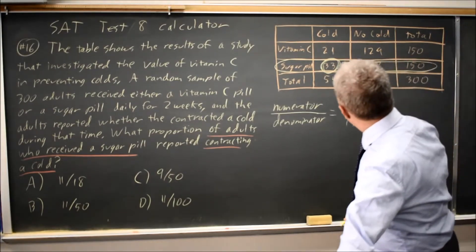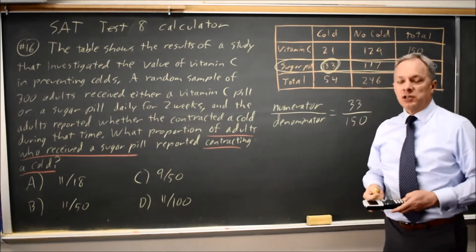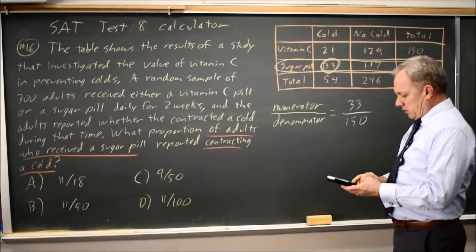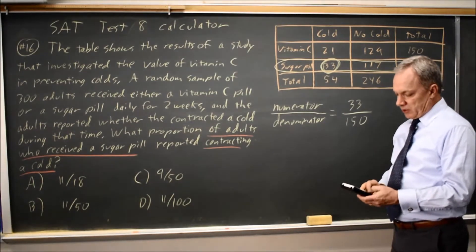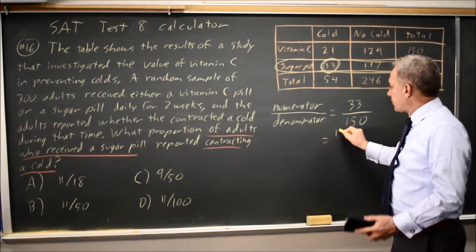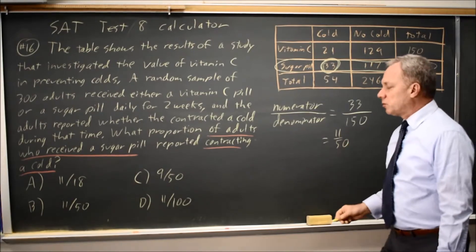Now 33 over 150 is not an answer choice. You can simplify that in your head or on paper, or you can say 33 over 150 and ask your calculator to make that a fraction, and that is 11 over 50, which is choice B.